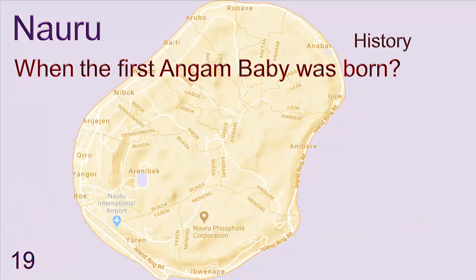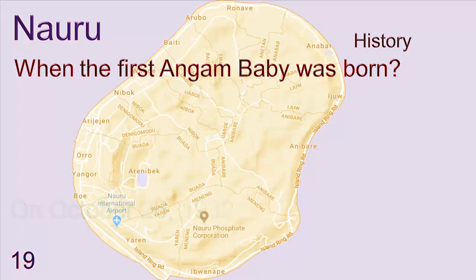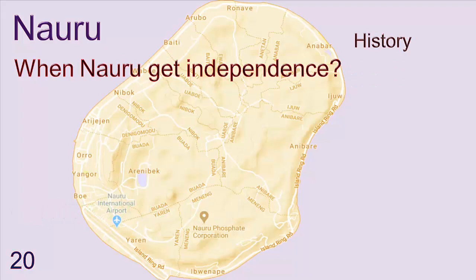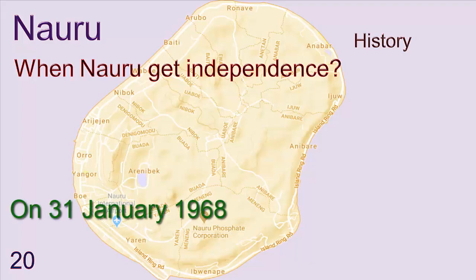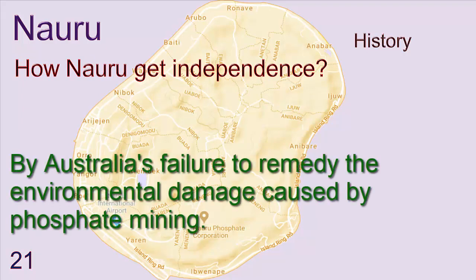When was the first Angam baby born? On October 26, 1932. When did Nauru get independence? On 31 January 1968. How did Nauru get independence? By Australia's failure to remedy the environmental damage caused by phosphate mining.